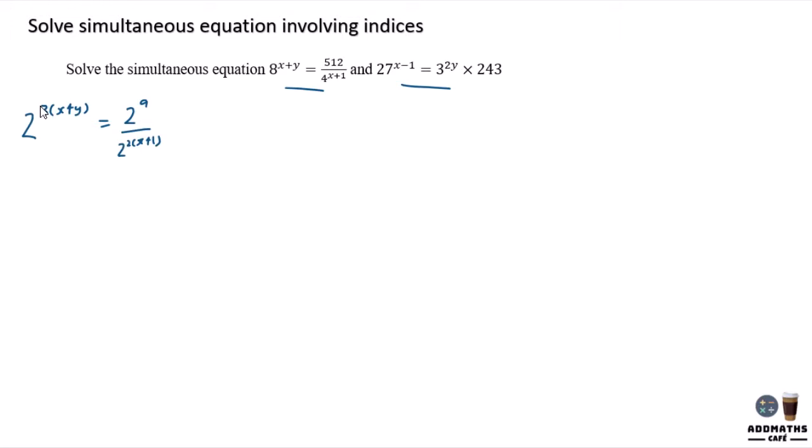And this case is a power lower base of 3. So 3x minus 3 equals 3 to the 2y times 3 power of 5. In this case, bring everything up.